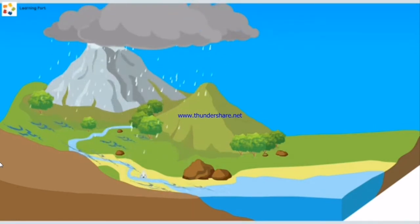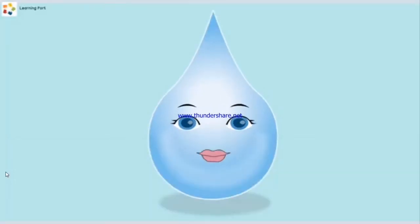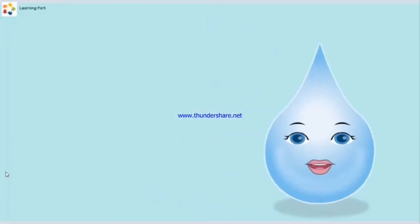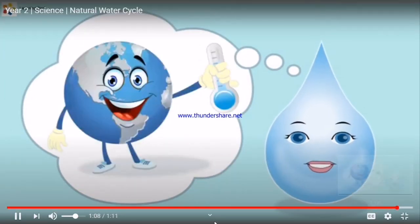The rivers flow into the sea. Tomorrow when it gets hot, we travel again in the same water cycle. The Natural Water Cycle is important because it supplies water to humans and other living things on Earth. It also helps to cool down the Earth.